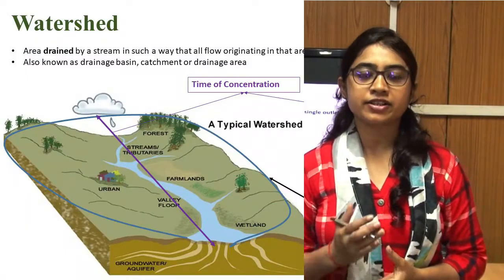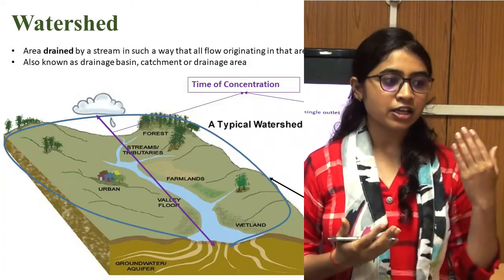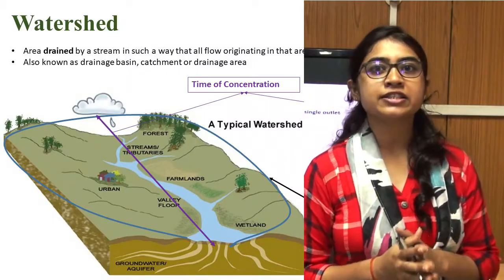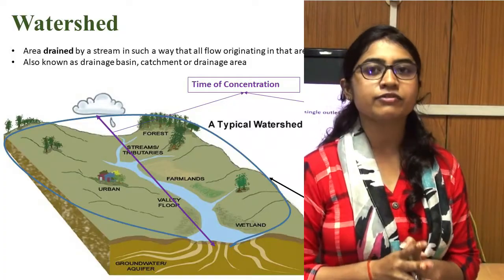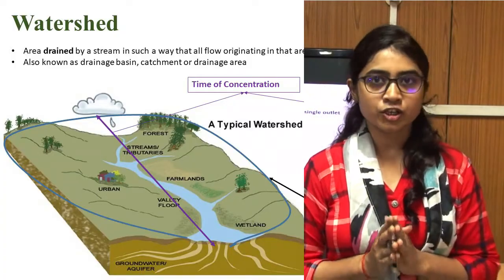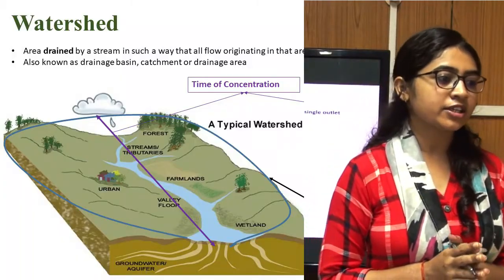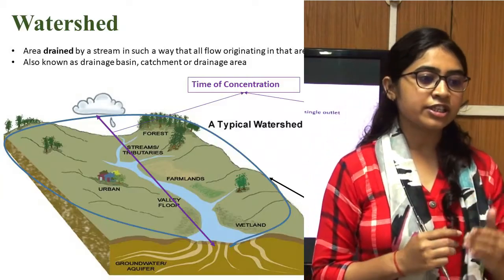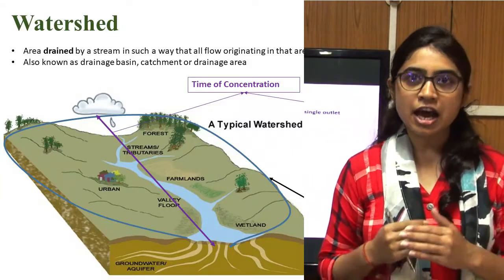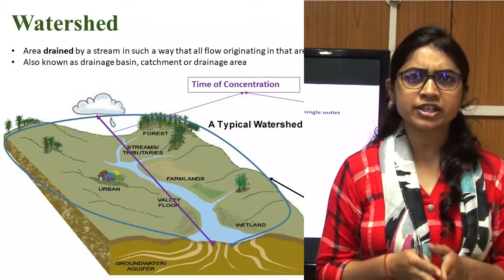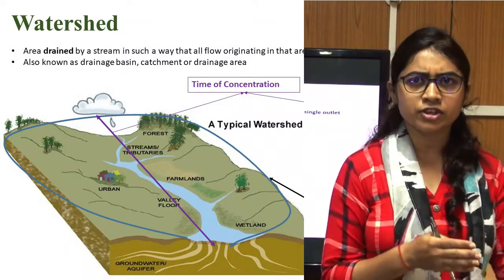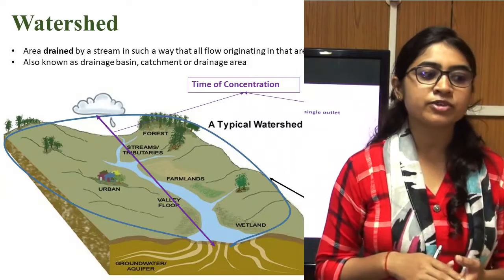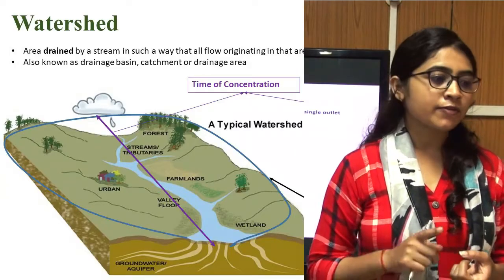Before starting the Grass Waterway design, we should know what is the watershed and what is runoff. Watershed is an area drained by a stream such that all flow originating in that area is discharged through a single outlet. In a single word, watershed is an area with a single outlet where all water flows. Watershed is also known as drainage basin, catchment, and drainage area.